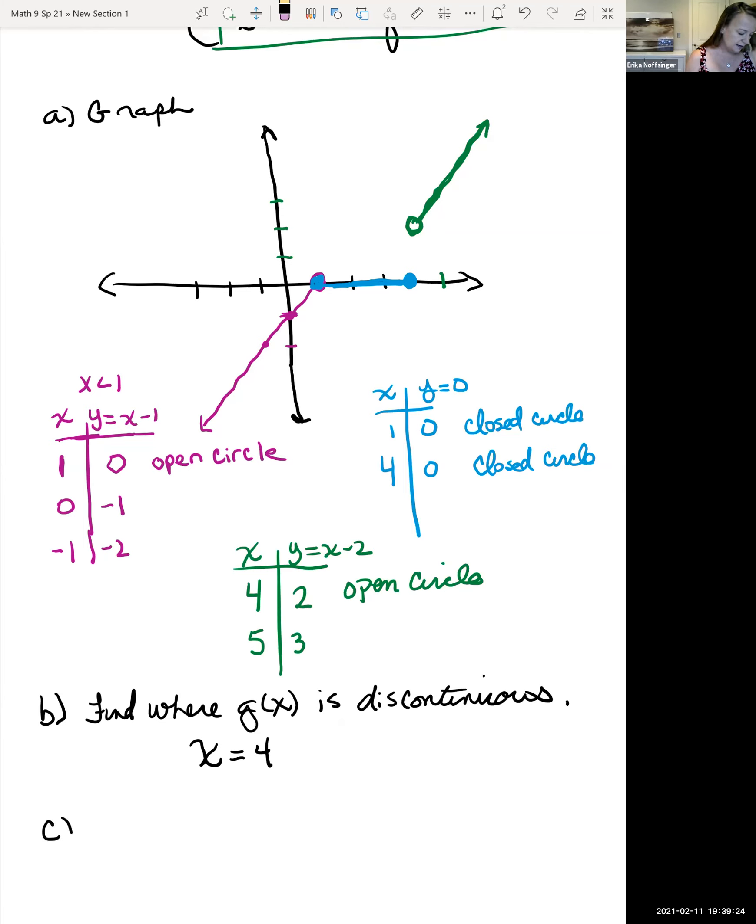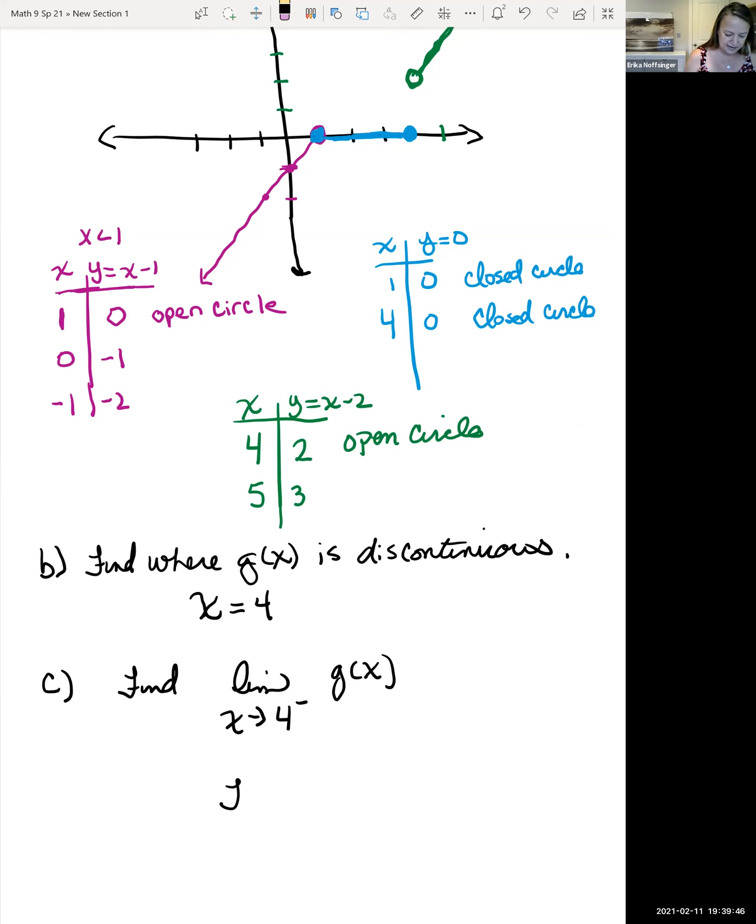And then part C, find the limit from the left and the right at any of the values x found in part B. So it wants us to find the limit as x approaches, in our case 4 on the left of g of x, and it wanted us to find the limit as x approaches 4 on the right of g of x.